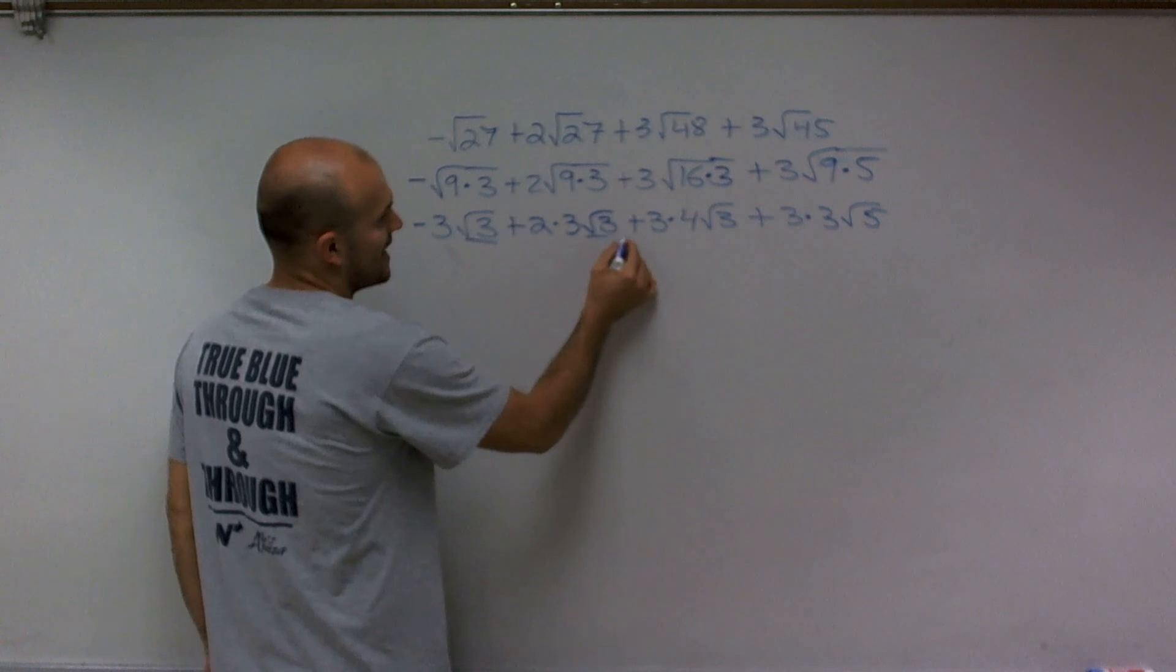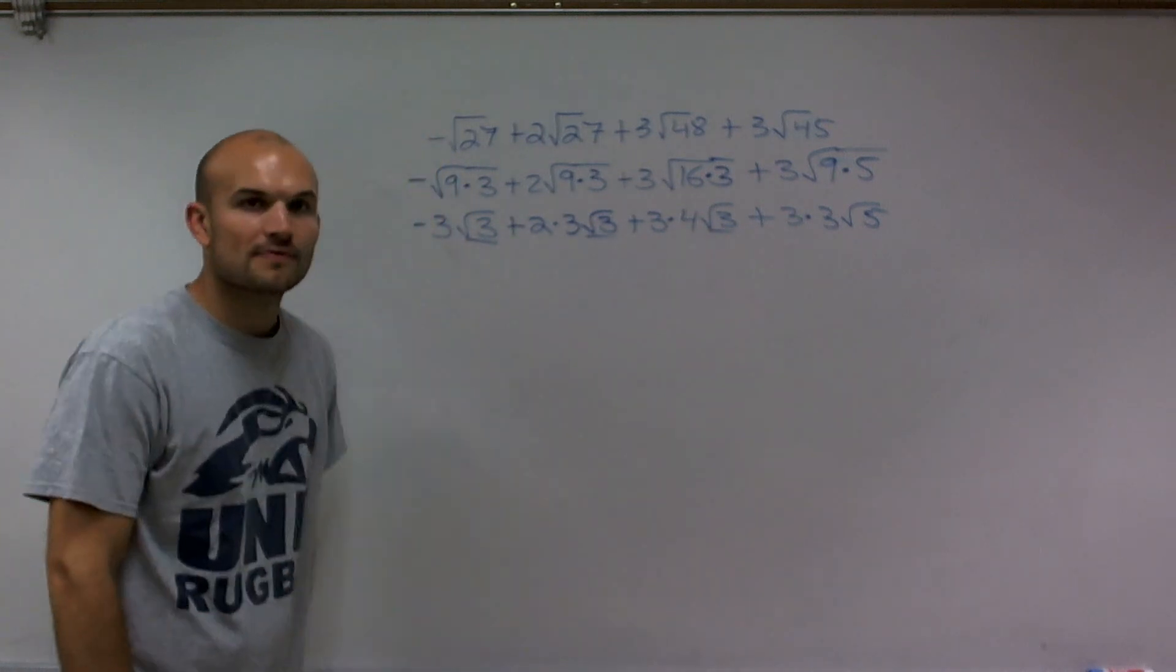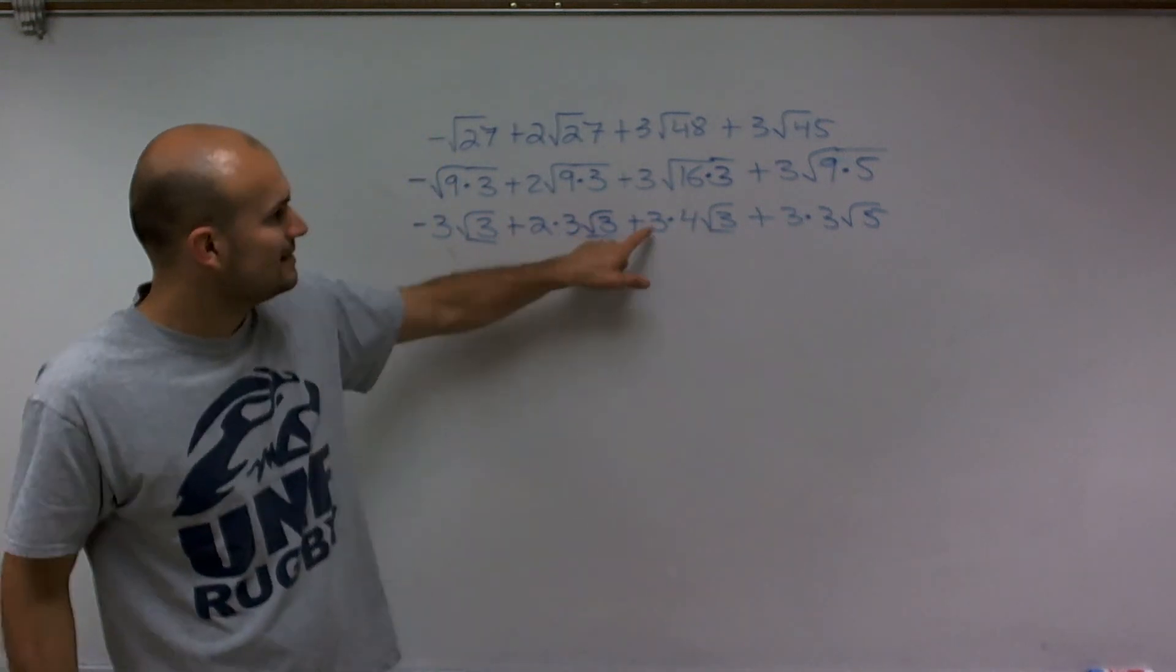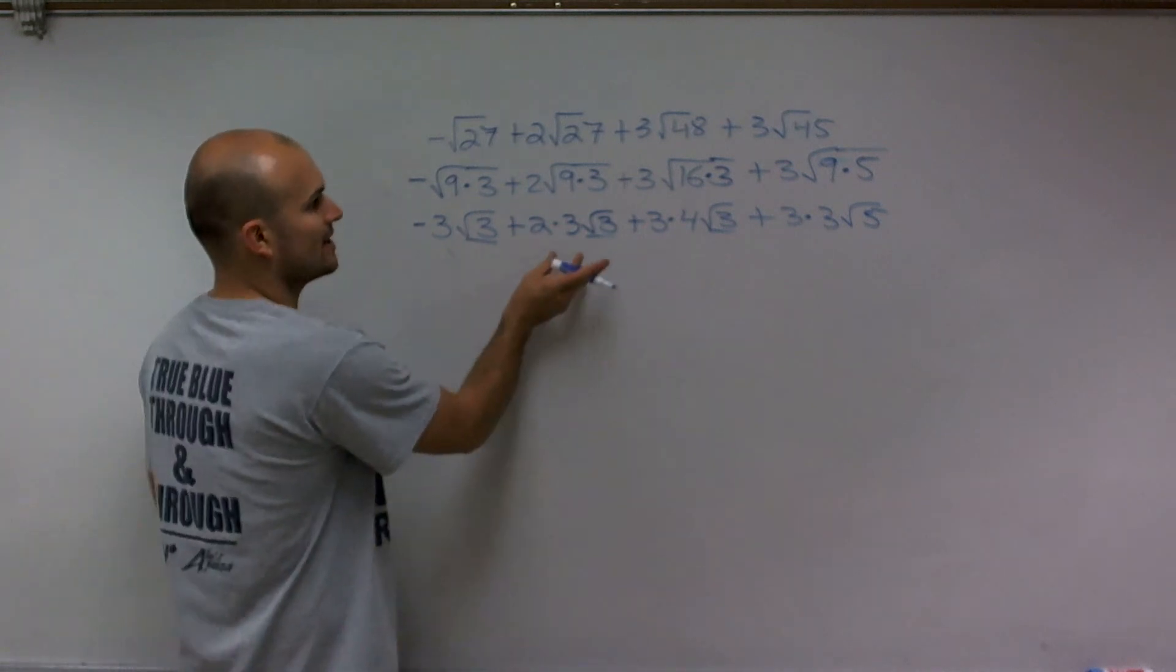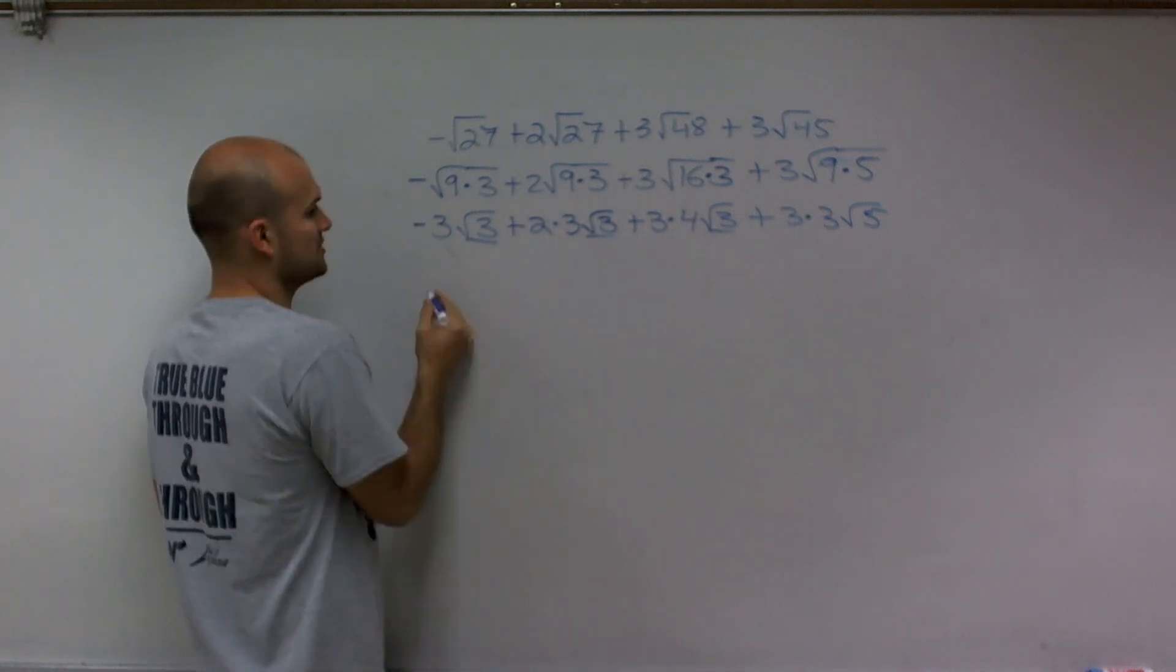Now what we notice is I have 3 square root of 3s, meaning I can combine them. I'm adding and adding up. But before I do that, I need to make sure I simplify what's being multiplied by each radical.